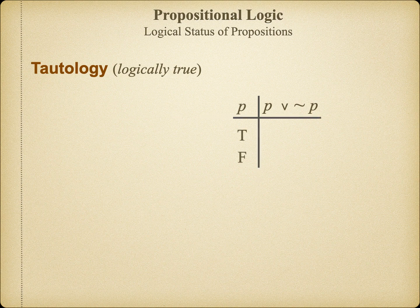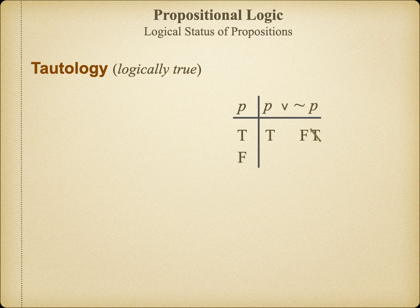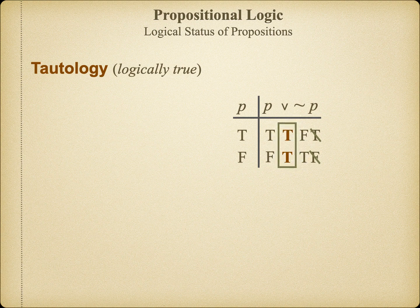Since we only have one simple proposition, we will only need two lines on our truth table, marking the two logical possibilities for P. We can look at Universe 1 and bring our truth values over directly under the proposition. Next, we solve for the negation of P on the right-hand side of the disjunction. Now we determine the truth function of the disjunction — since this operator tells us that only one of the two disjuncts has to be true, it's going to be true. We do the same thing for Universe 2 and solve for the disjunction. Again, we see that it will be true since at least one of the two disjuncts is itself true. Now that our table is complete, we see that in all possible worlds this claim is true. That's what logically true statements or tautologies are — a statement which must be true in all possible worlds.